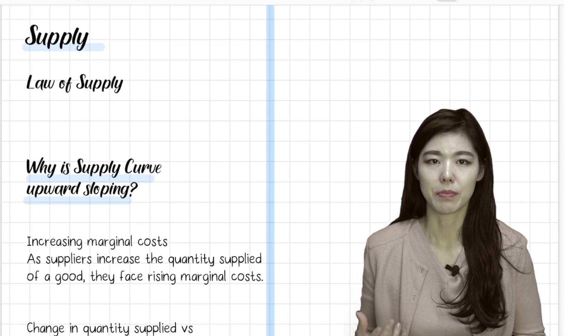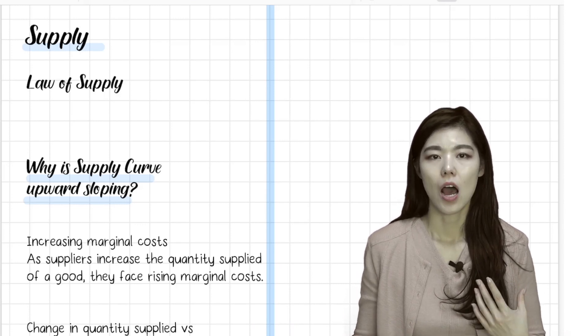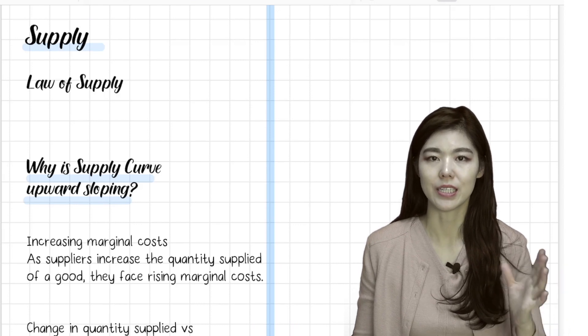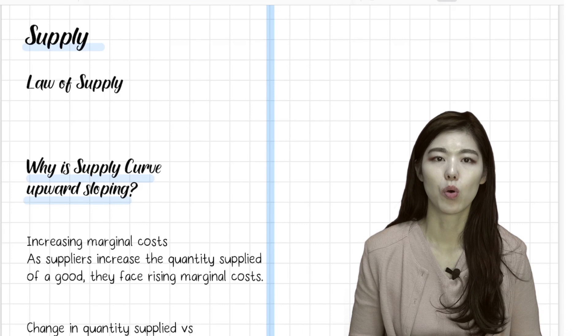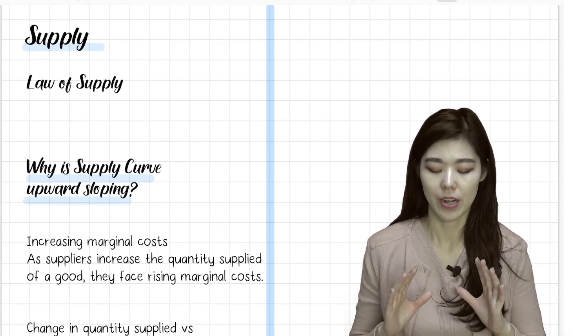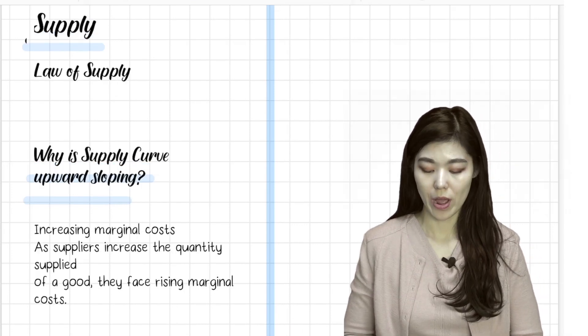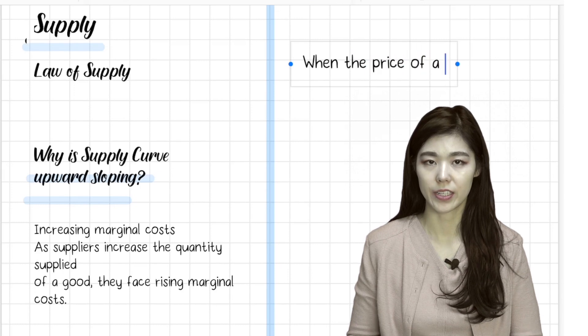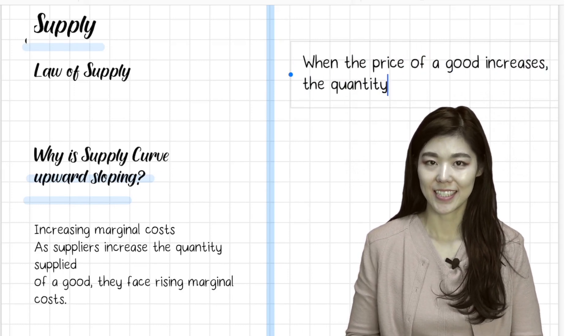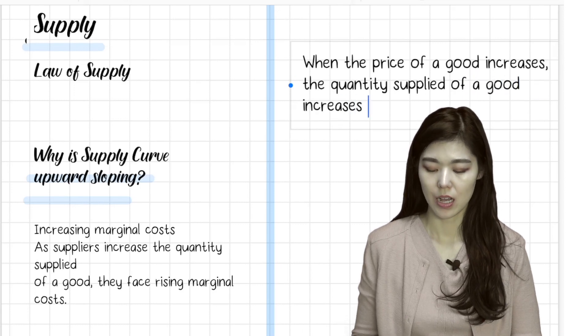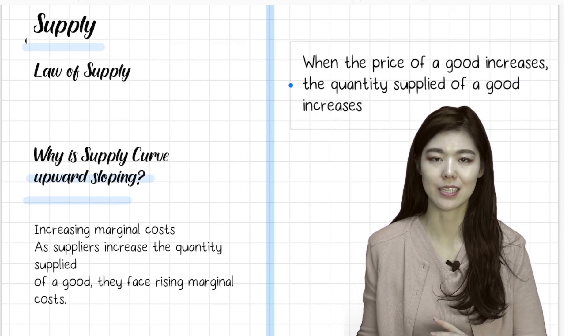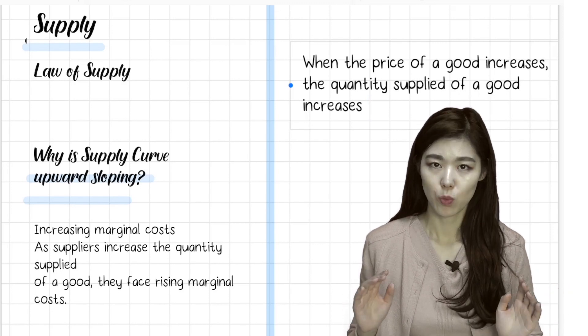See, as the price of a product increases, more quantity is supplied because more people are willing to sell the lemonade. Law of supply: when the price of a good increases, the quantity supplied of a good increases. This as well - not supply of a good increases. Supply doesn't shift, but quantity supplied of a good increases.